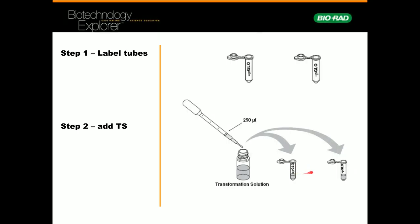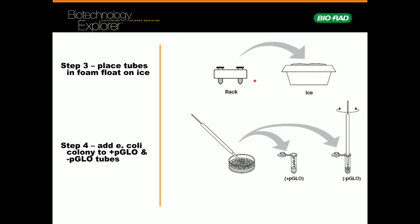In step three, you're going to place those microtubules back in the foam float. You can leave the LB and the TS in there if you want. You're going to place that on ice to start and begin to chill those.